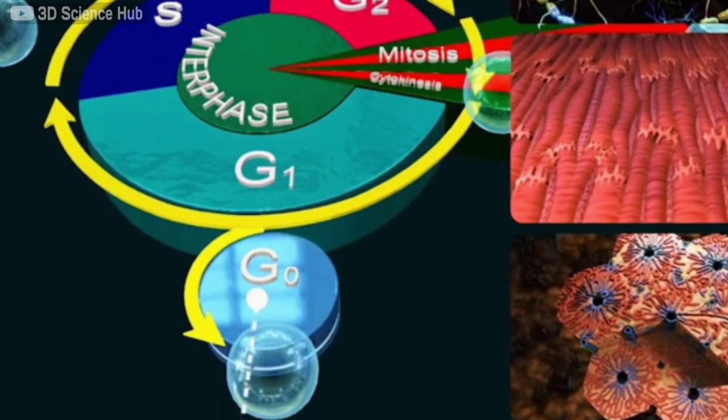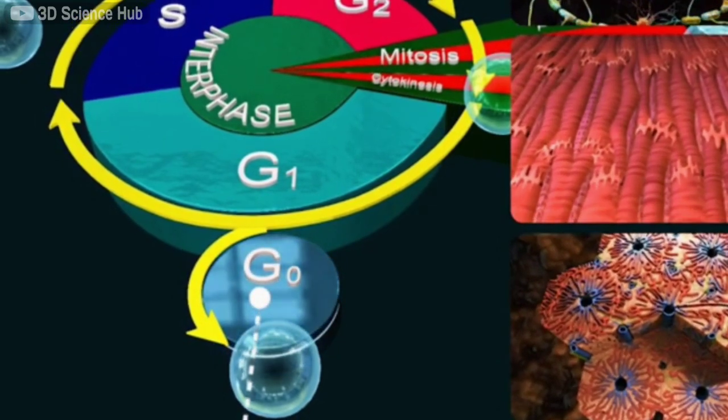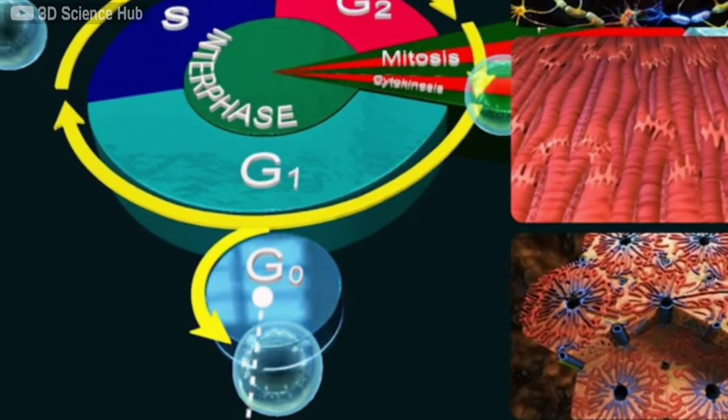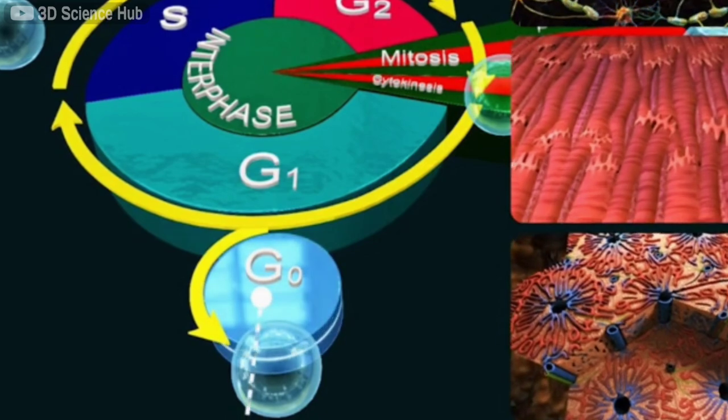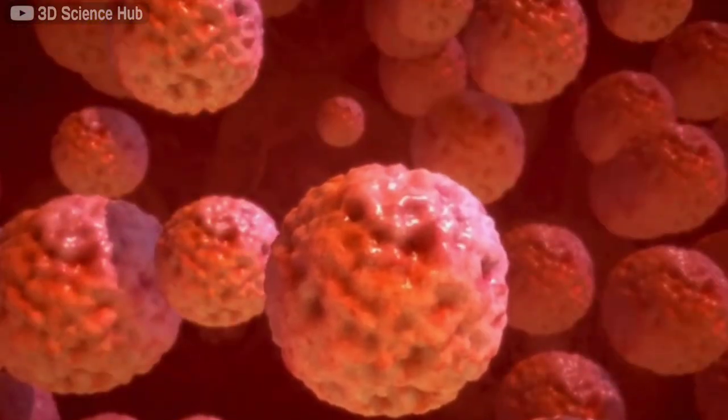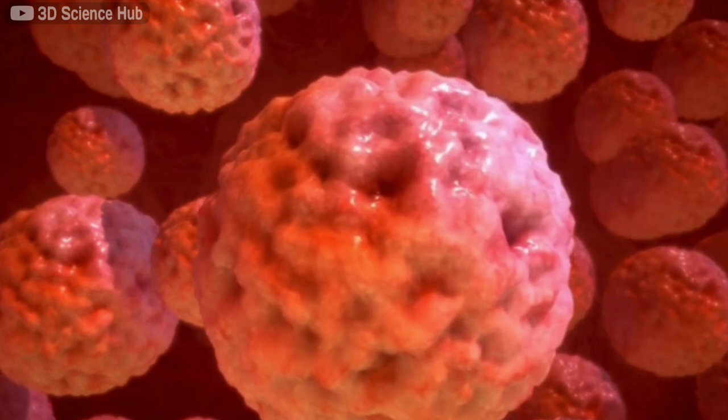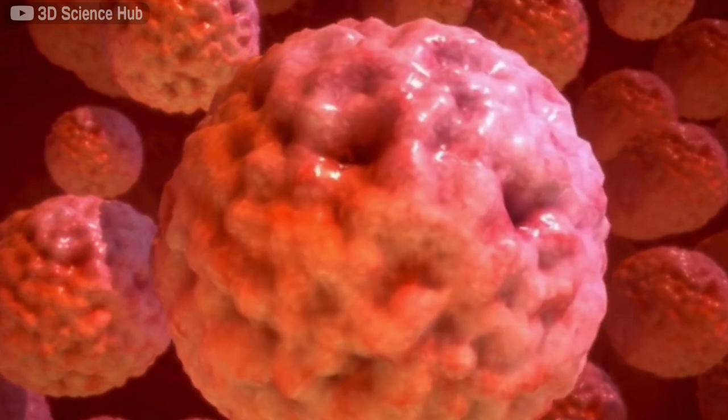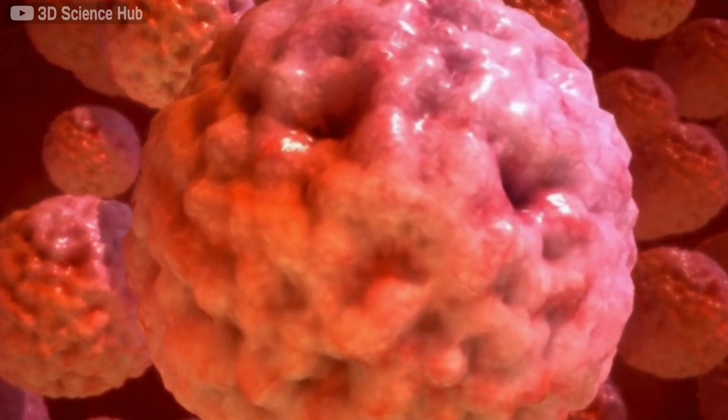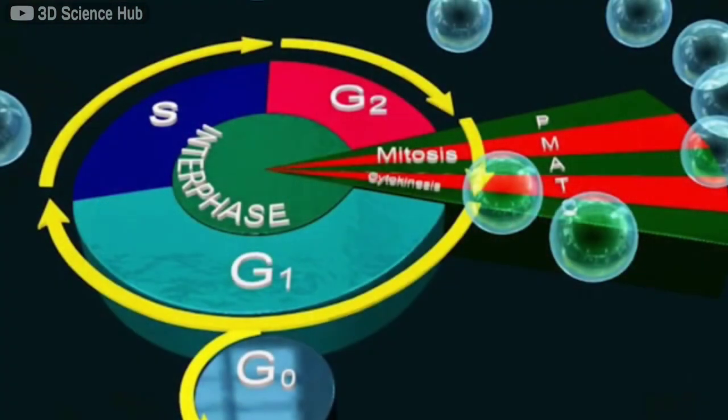Also known as the G0 phase, in this phase the cells are very much alive and metabolically active, but they don't divide unless some specific conditions occur. Cells that are in the G0 stage are also known as post-mitotic cells.